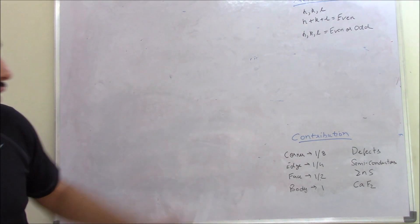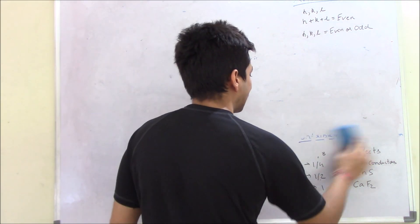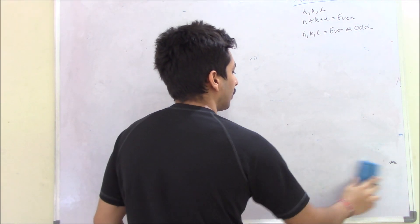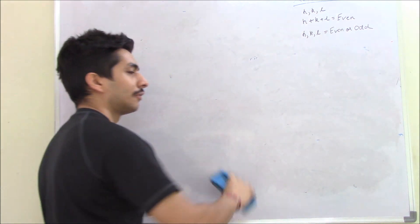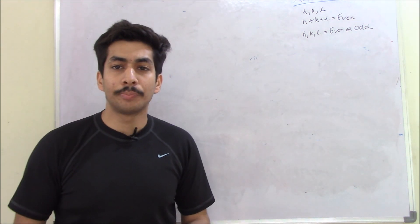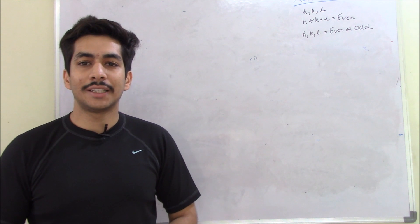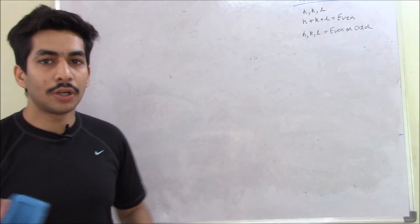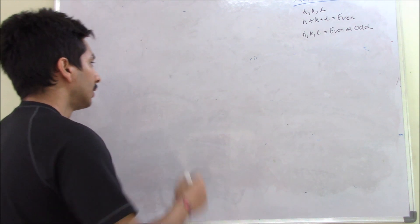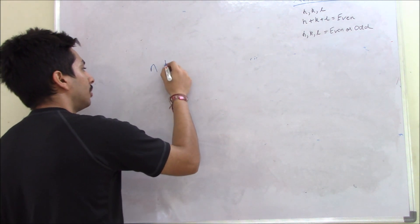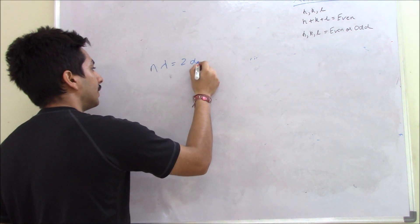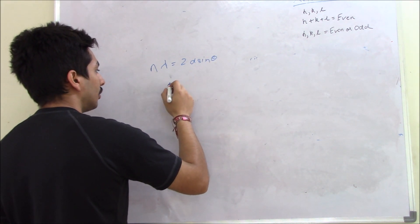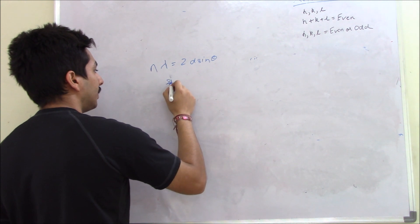Let's talk about the important part: the XRD pattern. Generally when you do XRD of a crystal, how do you identify whether a crystal is simple cubic, body-centered, or face-centered? You identify it with the help of XRD. Now here Bragg's law comes into the picture: n·λ = 2d·sinθ.